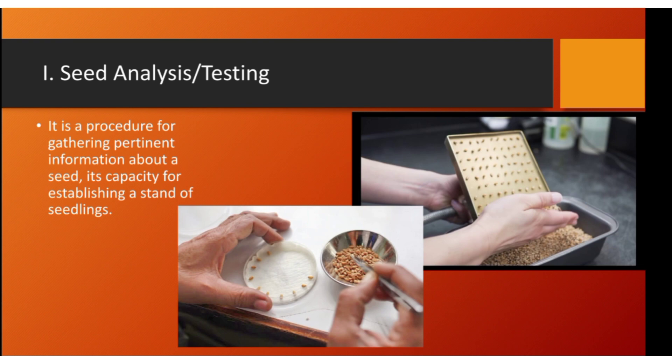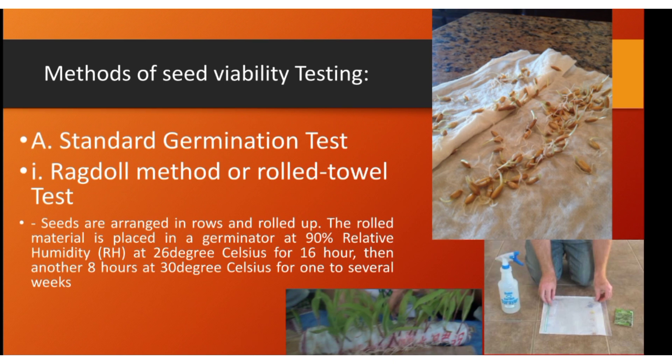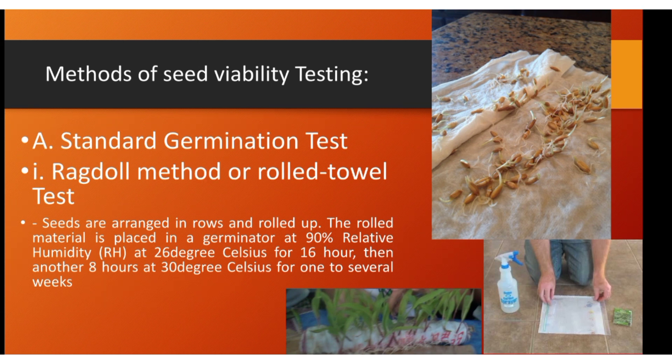For the methods of seed viability testing, first is the standard germination test. Germination is the process in which the seed sprouts its radicle and is already viable and can grow into a specific plant. First, we have the ragdoll method or the rolled towel test. You can use a rolled towel or cloth, and you need to use some sticks for it to roll up.